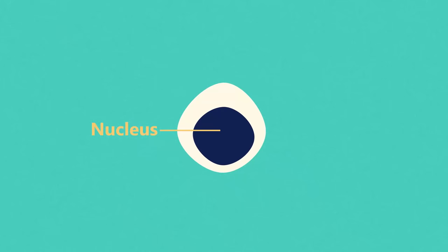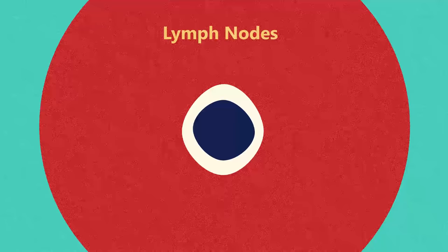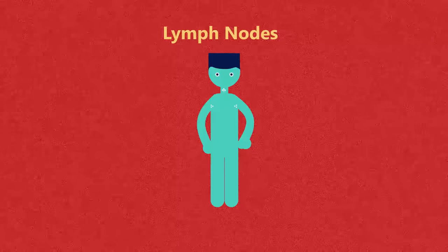Lymphocytes have a huge nucleus and just a little cytoplasm. They are formed in lymph nodes and are found all around the body such as in your armpits and neck.